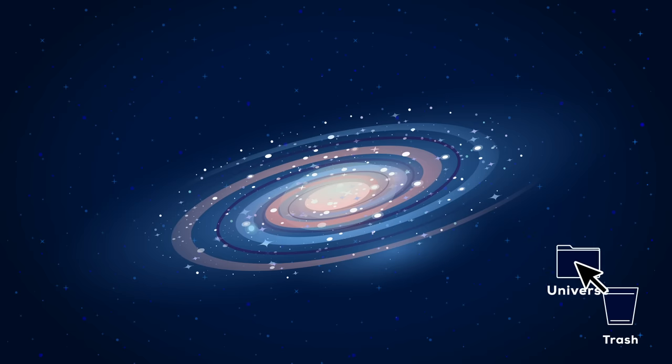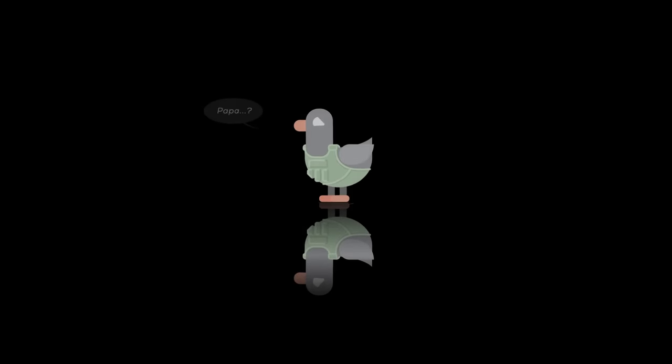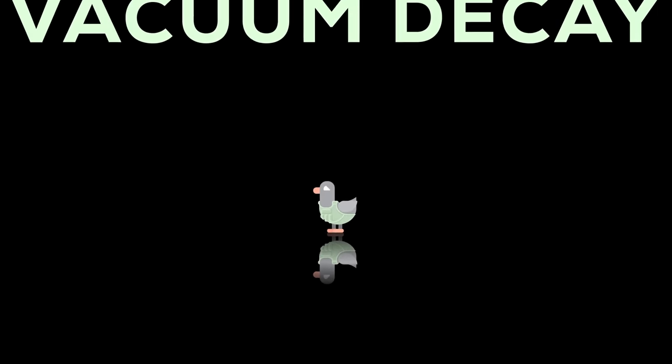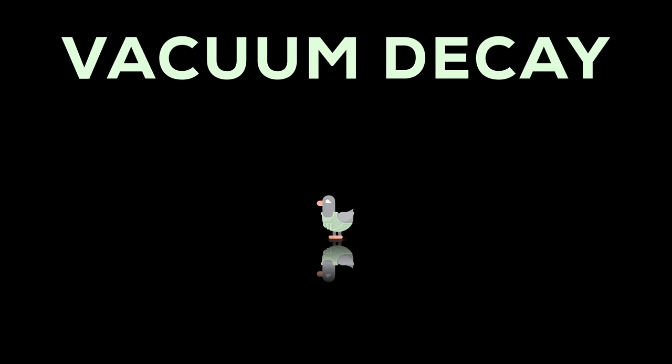What if our universe comes with a self-destruct button to eliminate itself so cleanly and efficiently that every single physical thing would just stop existing and life would be impossible forever? The ultimate ecological catastrophe: vacuum decay.